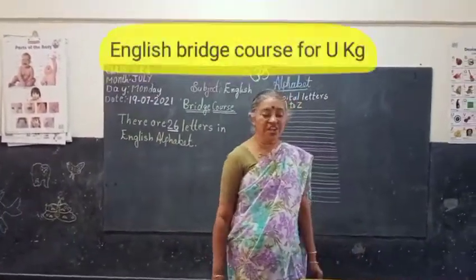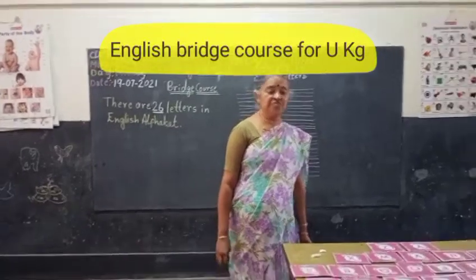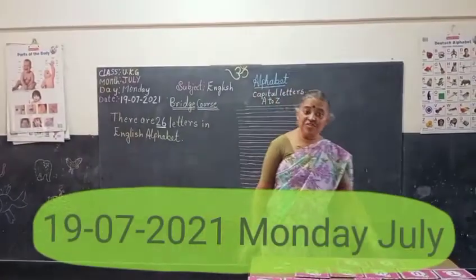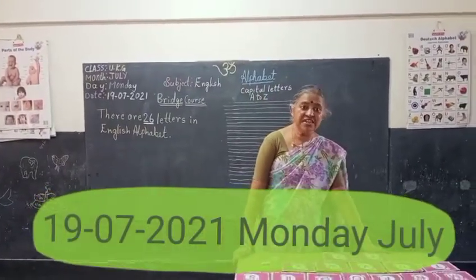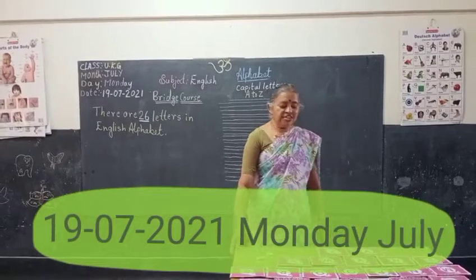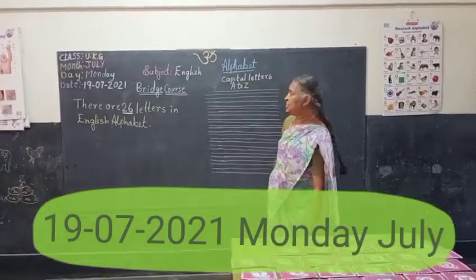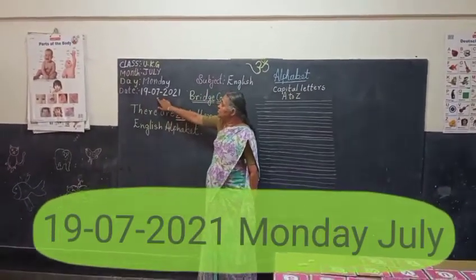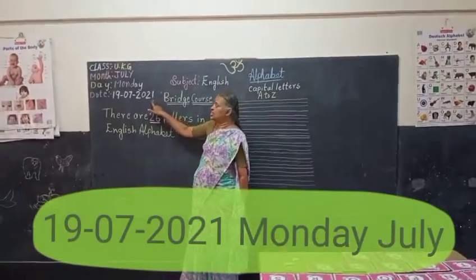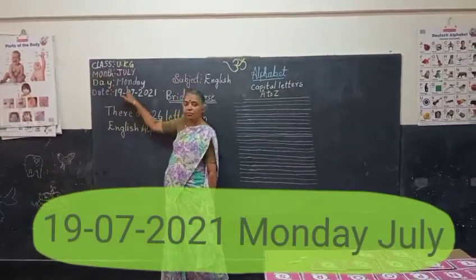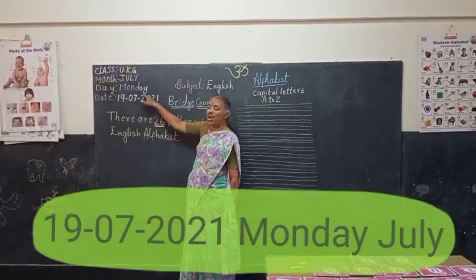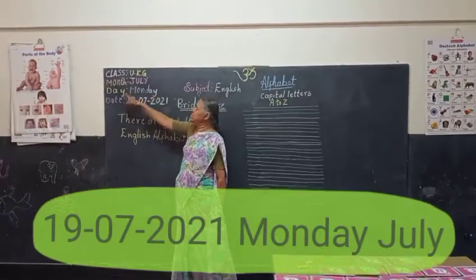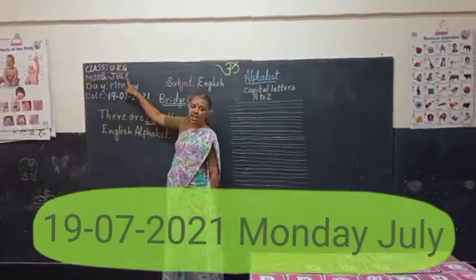Good morning children, welcome to the English class. Today we can learn the attributes we have studied in previous class. Before that, we can learn the date. Today is 19 July 2021. Today is Monday — M-O-N-D-A-Y, Monday. Which month is it, children? That is July — J-U-L-Y, July.